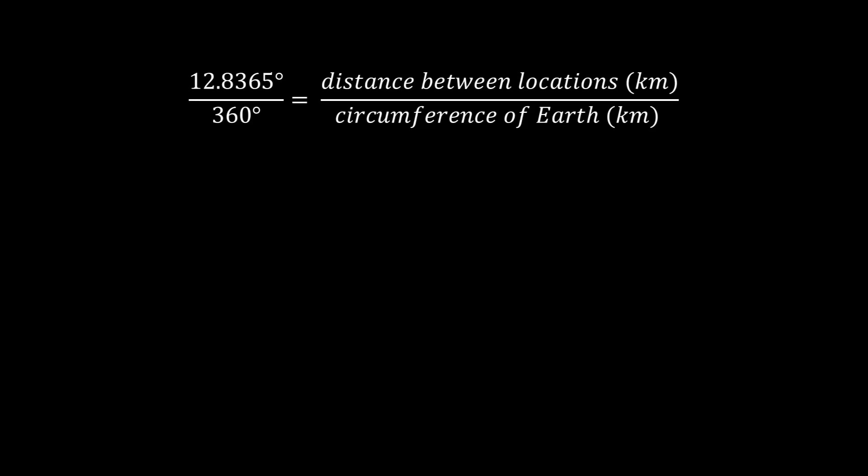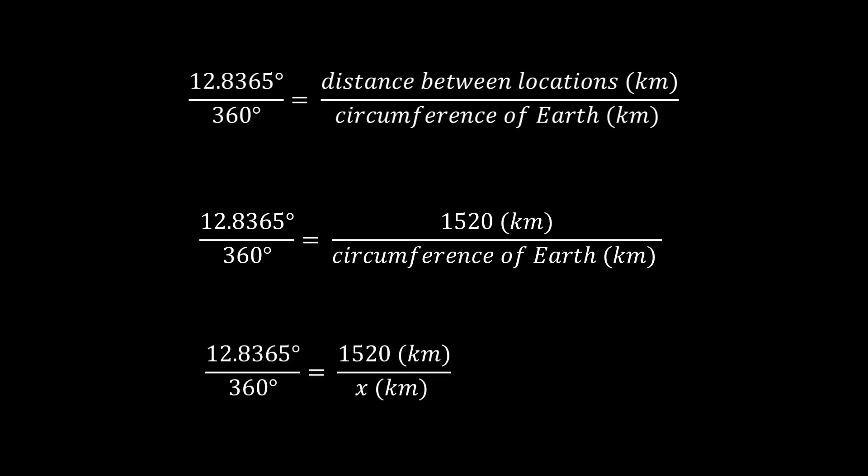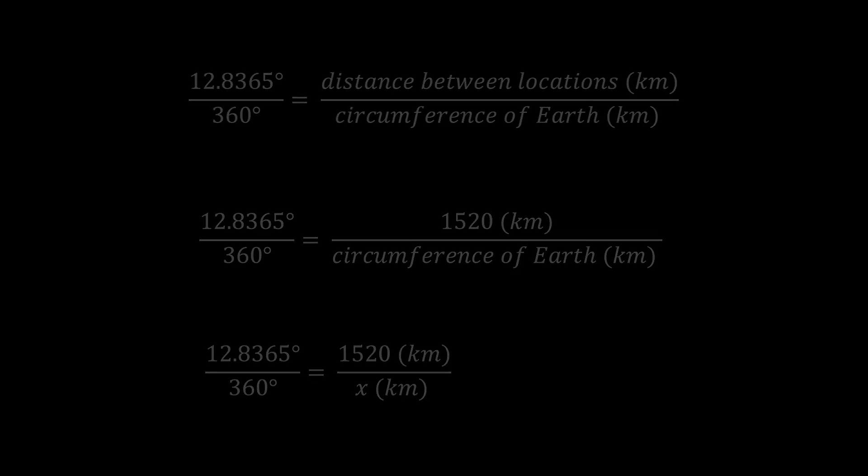We take that back to our proportion plug it in we get the equation here the circumference of earth is what we're trying to find so let's just put an x in there. We now have a complete proportion. I'm going to assume that you guys know how to solve this little cross multiply and divide and the end result is that according to my measurements the circumference of the earth is 42,628 kilometers.